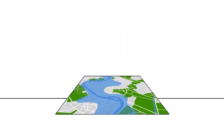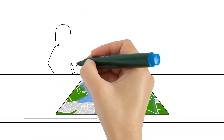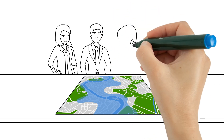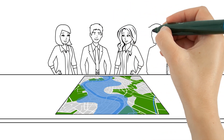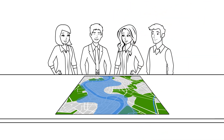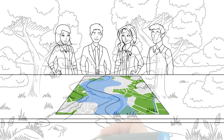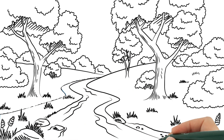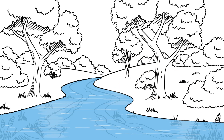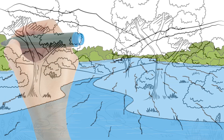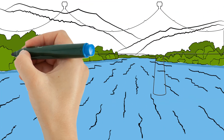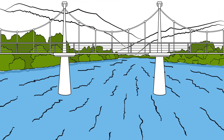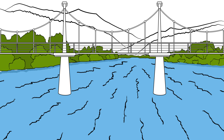Maps can convey all kinds of data and tell a variety of stories. Different maps have different uses and flood maps are no different. Some maps support emergency response during a flood, and other maps are used to plan future development and help build safer communities over the long term.